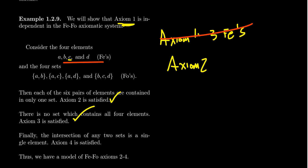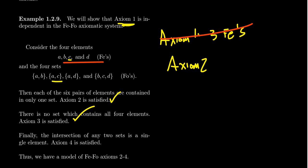Axiom four says any two distinct foes contain at least one fee that belongs to both of them. Looking at pairs of foes: AB and AC both contain A; AB and AD both contain A; AB and BCD both contain B; AC and AD both contain A; AC and BCD both contain C; AD and BCD both contain D. So every pair of foes shares at least one fee. Axiom four is satisfied.